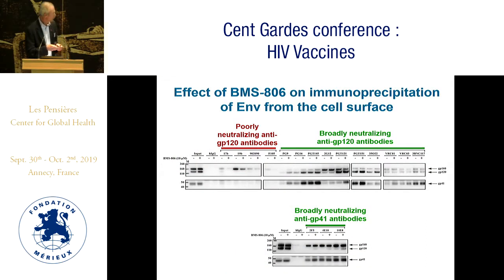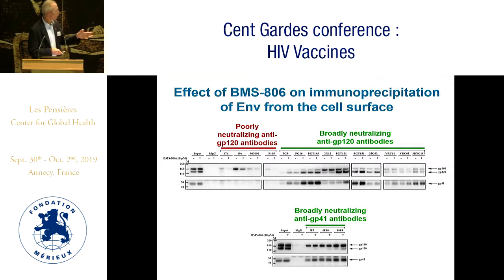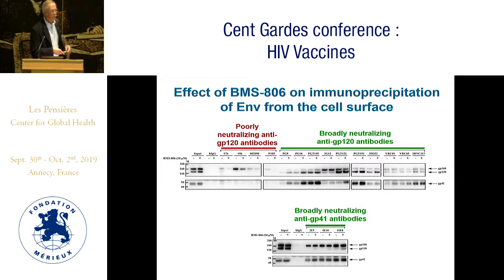Here's a typical result, showing the input envelope proteins in the cell lysate: the GP160 uncleaved precursor, GP120, and GP41. When you look at poorly neutralizing antibodies — those that see state 2 and state 3 — what they primarily recognize on the cell surface is the uncleaved envelope, and they recognize it even more poorly in the presence of BMS-806. By contrast, all broadly neutralizing antibodies against GP120 and GP41 recognize the cleaved envelope glycoprotein, GP120 and GP41, and in the presence of BMS-806 that recognition is either maintained or enhanced.